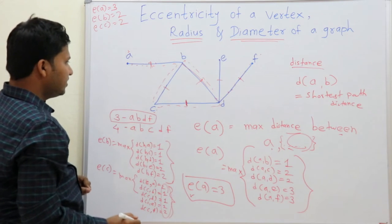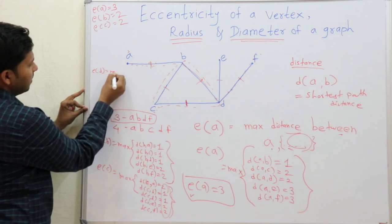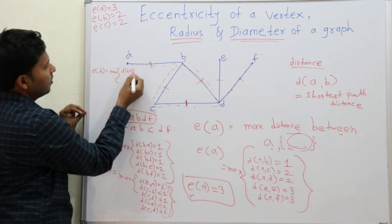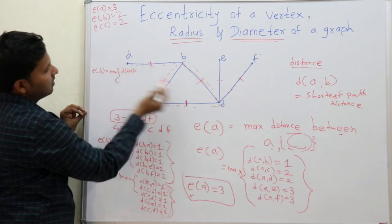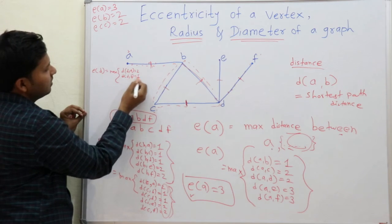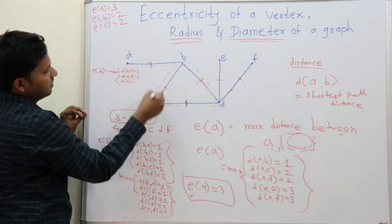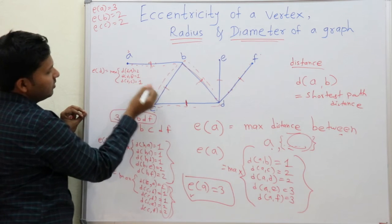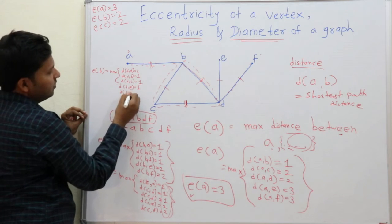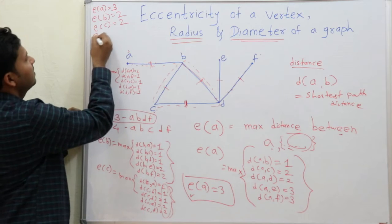Now eccentricity of D. Distance D to A is 2, D to B is 1, D to C is 1 — taking the shortest path. Distance D to E is 1 and D to F is 1. The maximum is 2, so the eccentricity of D is 2.